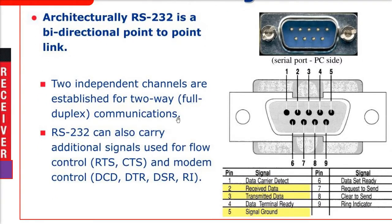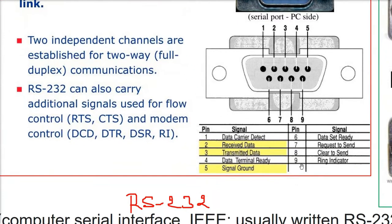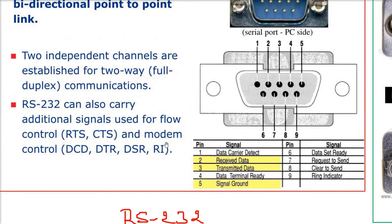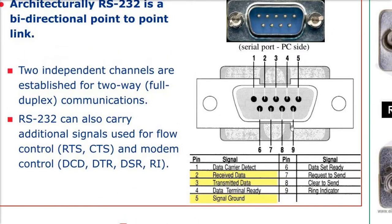Two independent channels are established for two-way, that is full duplex — both parties can talk simultaneously. RS-232 was actually designed for modems. Since we are using it for peripheral device connection, there are nine pins to be precise, and there are certain modem control pins and two pins for flow control.